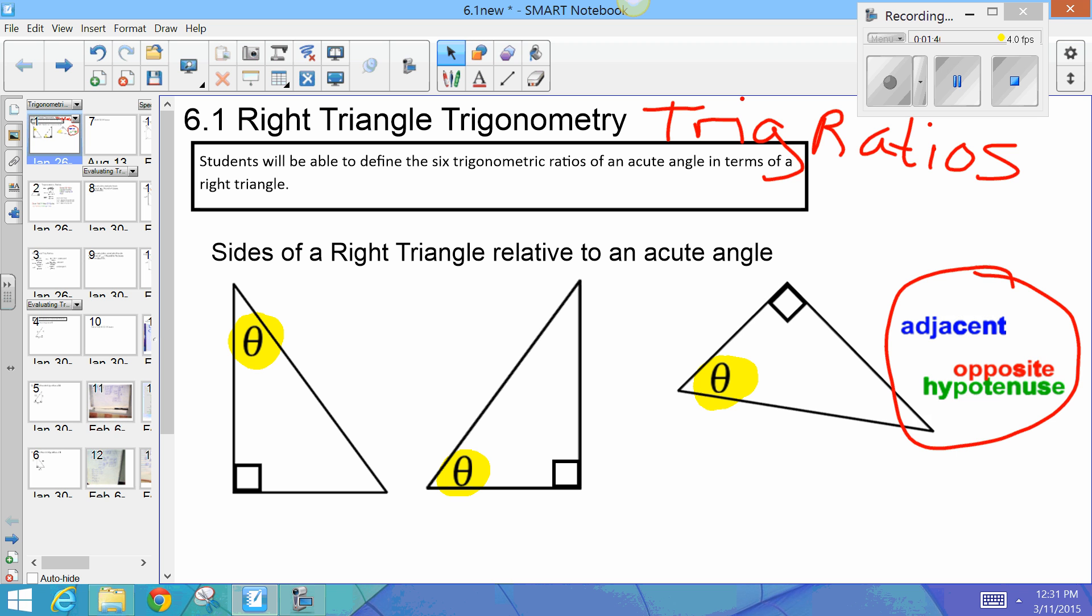The hypotenuse is always the one that is across from the right angle. Okay, across from the right angle. It is also always the longest side of the triangle.